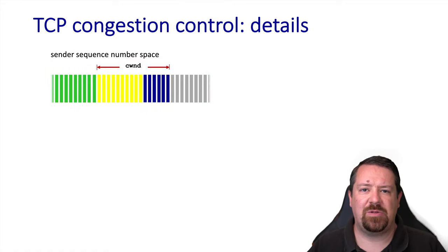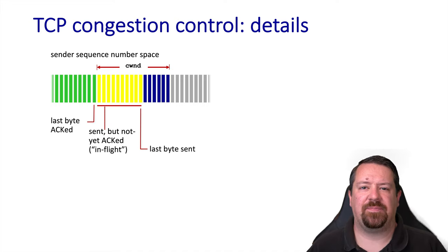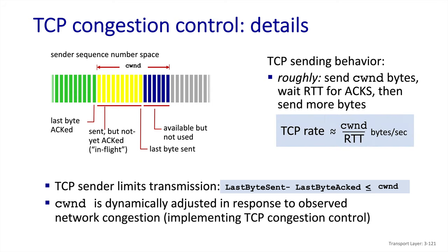In our sender buffer, the window is now referred to as the congestion window, and its size will change depending on the inferred congestion properties of the network. It still starts after the last byte acknowledged, with in-flight packets and any available space. The congestion window constrains that the difference between the last byte sent and the last byte acknowledged must be less than the congestion window. TCP sends roughly that many bytes, waits a round trip time for acknowledgements, then sends more — so the congestion window divided by the RTT gives the average sending rate.